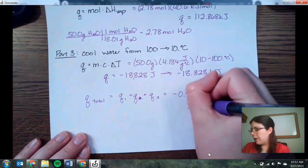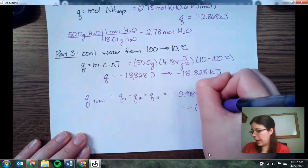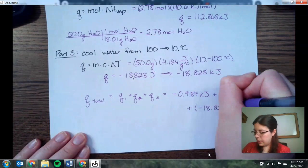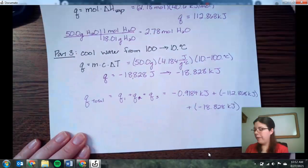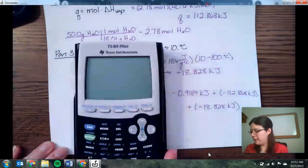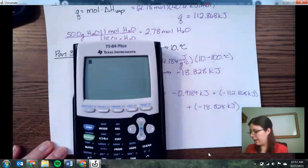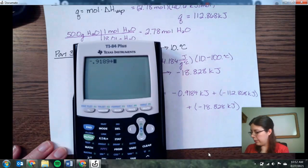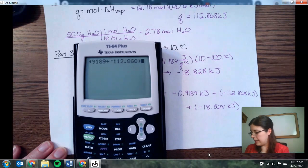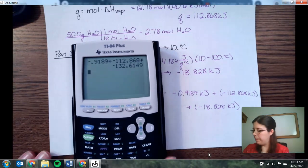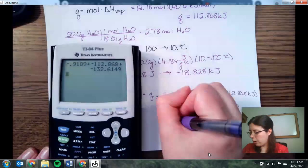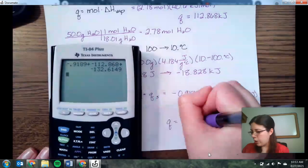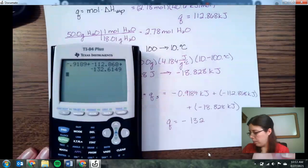And then finally, we're going to add that negative 18.828 kilojoules. So now we pull out our best friend, the calculator. So we add that all up. Negative 0.9189 plus a negative 112.868 plus a negative 18.828. So we go ahead and plug that in.